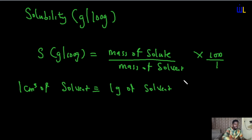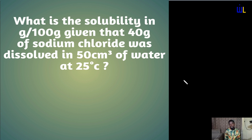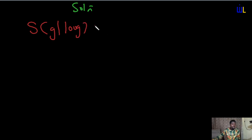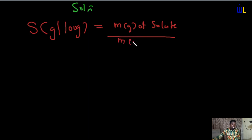Let's try a question. What is the solubility in gram per hundred gram, given that 40 grams of sodium chloride was dissolved in 50 cm³ of water at 25 degrees Celsius? We are asked to find the solubility in gram per 100 gram. Solubility in gram per 100 gram is mathematically expressed as mass in gram of solute divided by mass in gram of solvent, multiplied by 100 over 1.